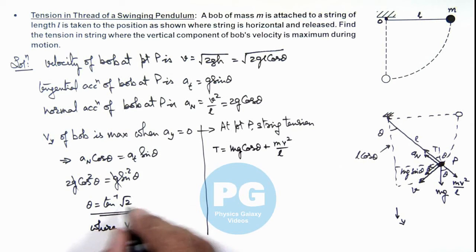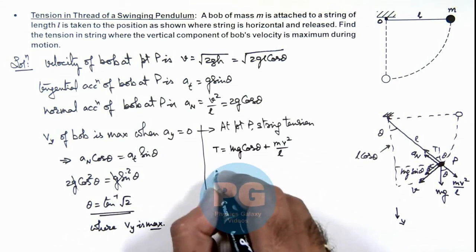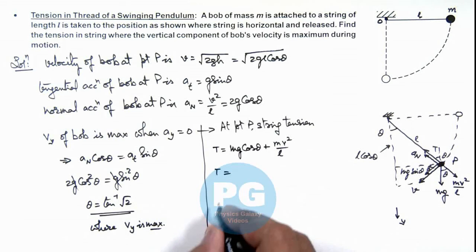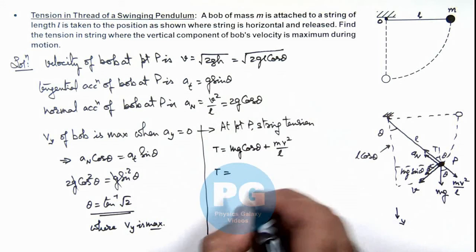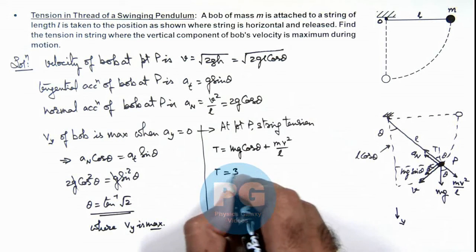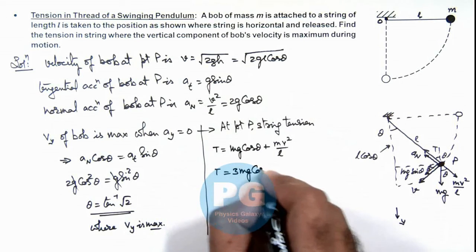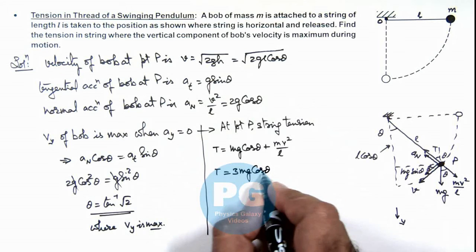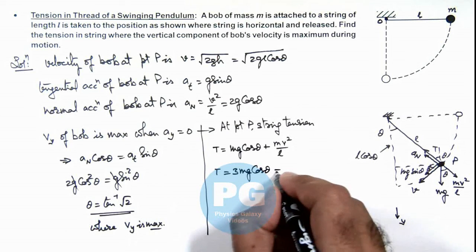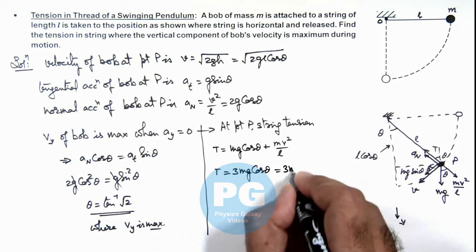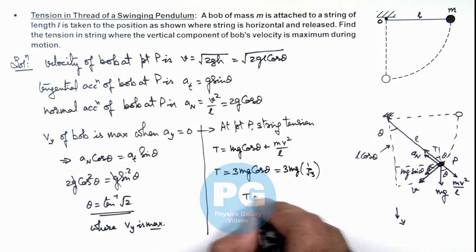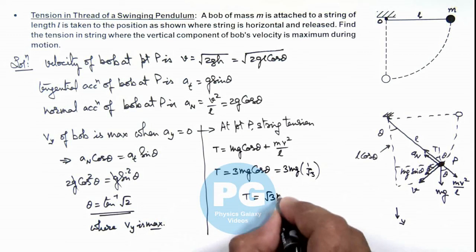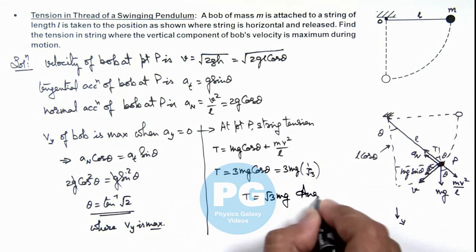This will be 3mg cos θ, and the value of cos θ here will be 1/√3. So this result will be 3mg multiplied by 1/√3. The value of tension at this point is √3 mg. That will be the final result of this problem.